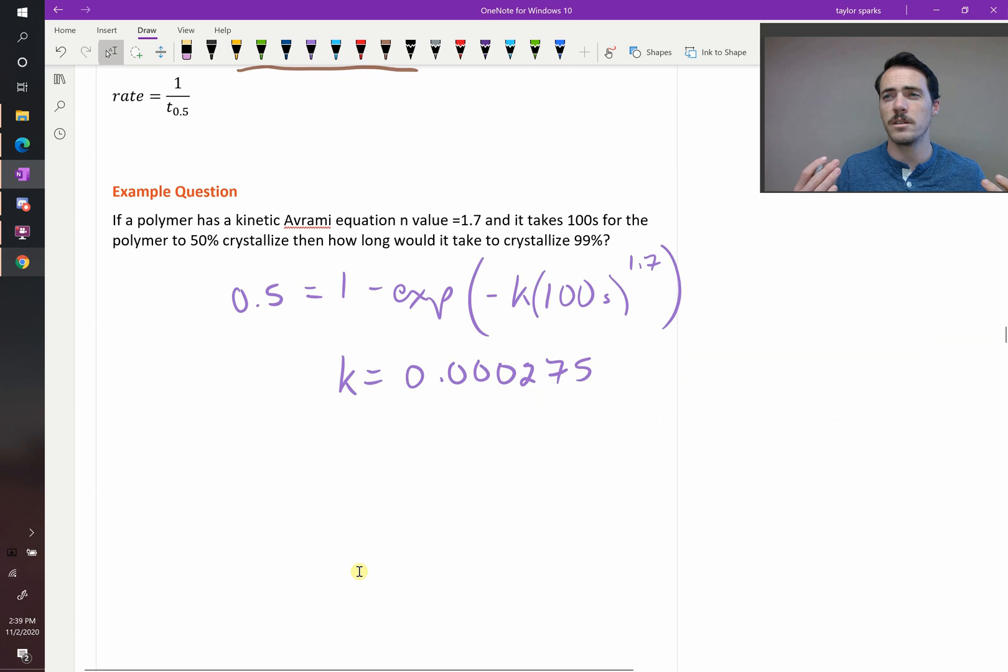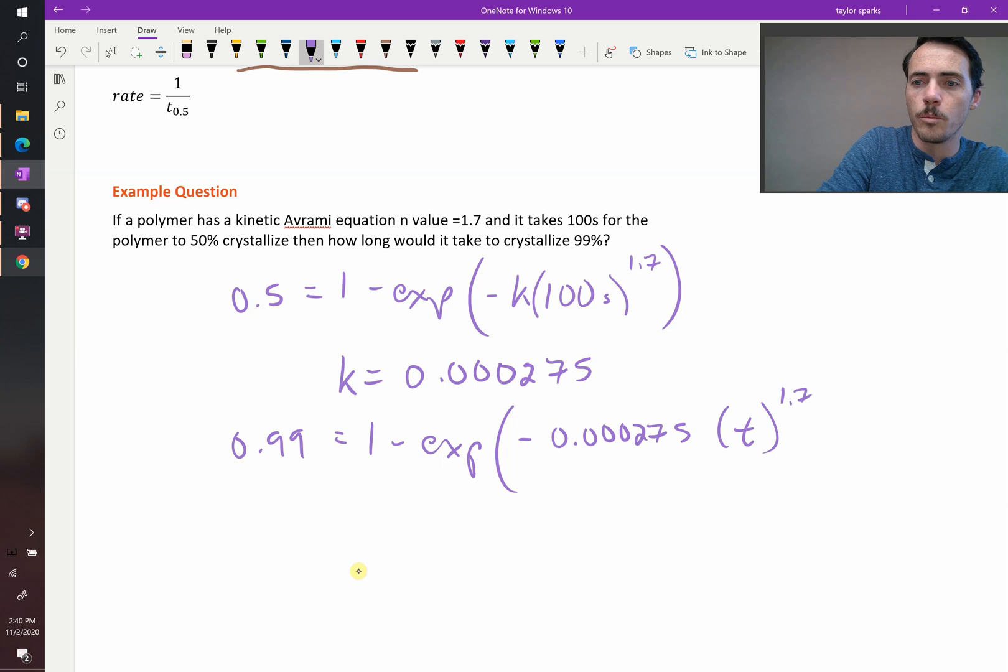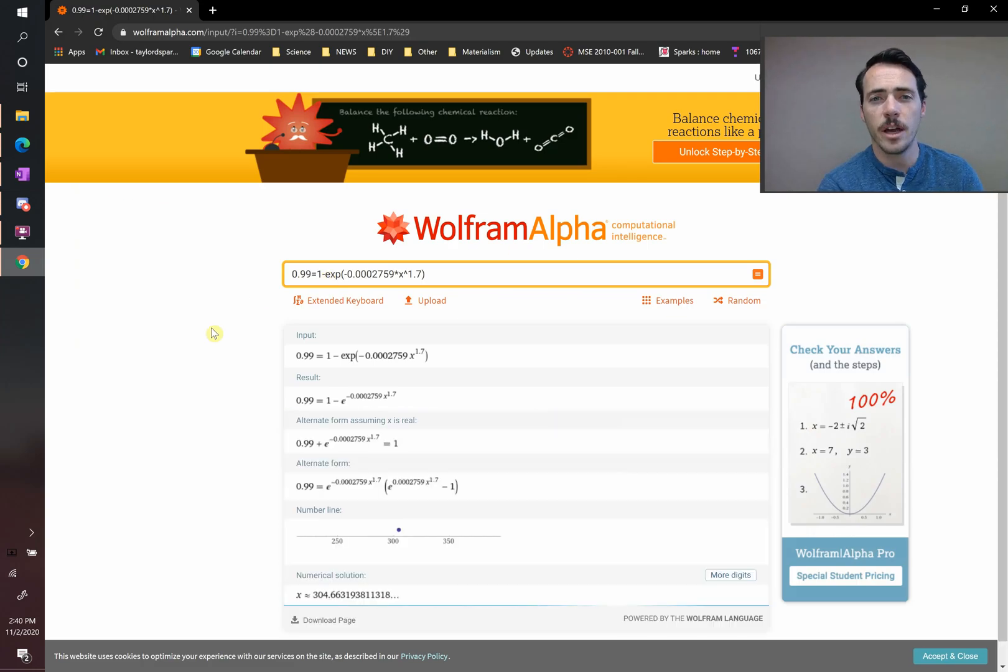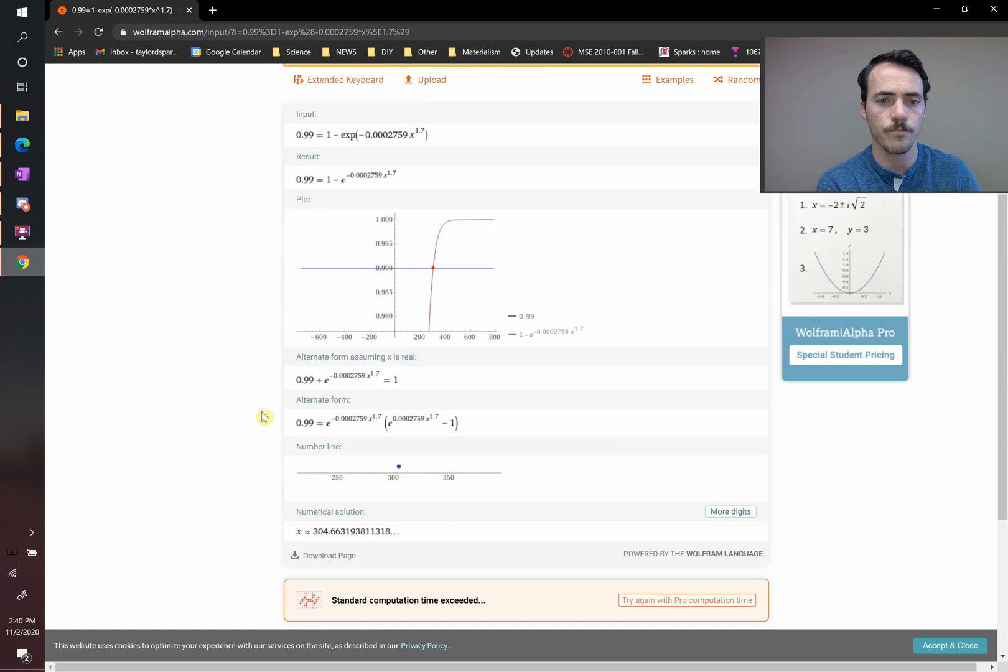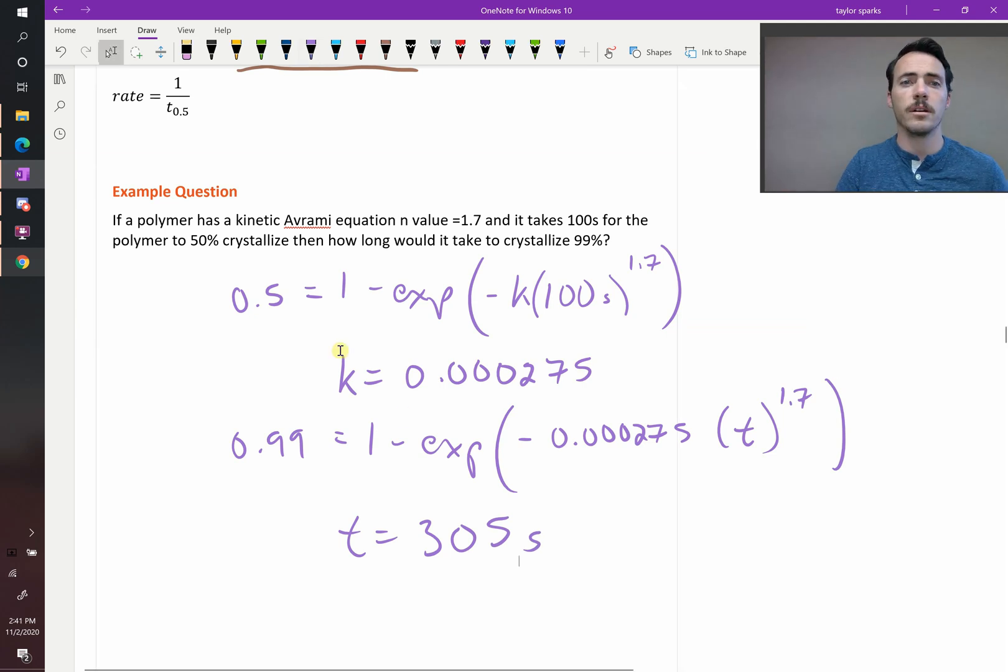So to do it for 99%, we're going to do 0.99 is equal to 1 minus the exponential of negative 0.000275, multiplied by our time necessary for crystallization to that amount, raised to the 1.7 value, our N value. And then, plugging in and solving for T, we get that it's equal to... All right, when I go ahead and plug that into Wolfram Alpha, I find that the time necessary for this crystallization is now going to be equal to 304.6, so roughly 305 seconds. Okay, so that's how you use the J-M-A-K or Avrami equation to do kinetics of transformations.